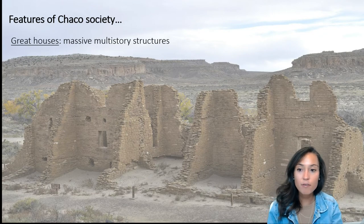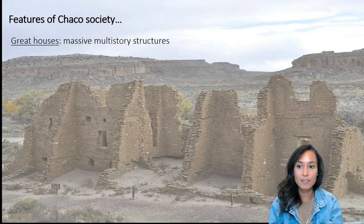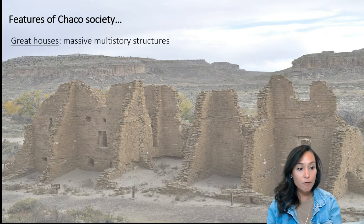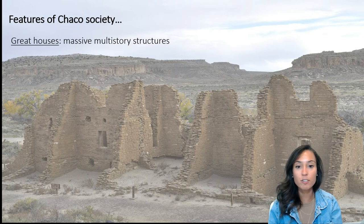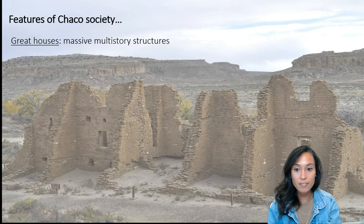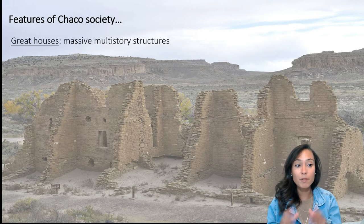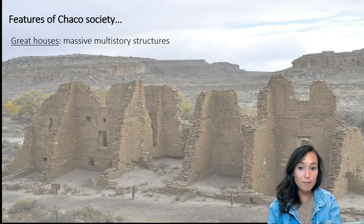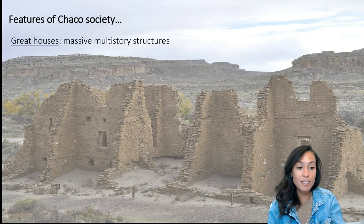Chaco itself consists of dozens of great houses connected through a series of road networks. Great houses are massive multi-story structures with as many as 600 rooms. In contrast to the usual practice of just adding rooms to existing structures, these great houses were planned from the start, showing evidence of organized, planned structural creation. These large Pueblo room blocks would have taken several decades, perhaps even centuries, to complete.